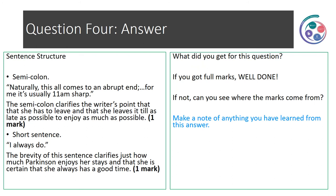The answer to question four. Semicolon: 'Naturally, this all comes to an abrupt end... For me, it's usually 11am sharp.' The semicolon clarifies the writer's point that she has to leave and that she leaves it till as late as possible, because she's having a great time — that gets the first mark. The second mark comes from identifying the short sentence: 'I always do.' The brevity of this sentence clarifies just how much Parkinson enjoys her stay and that she is certain she always has a good time. Make a note of anything you've learned from this answer.